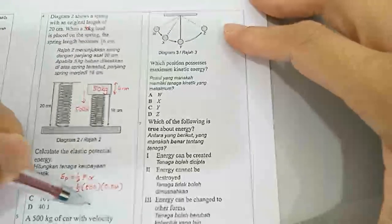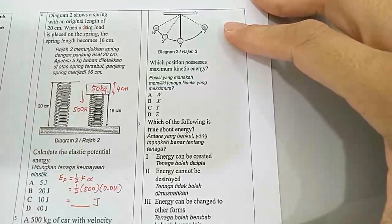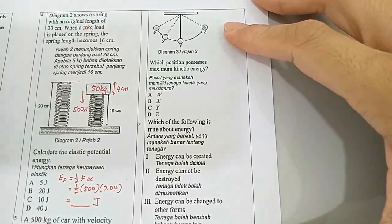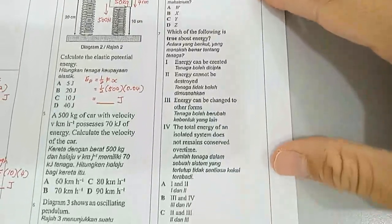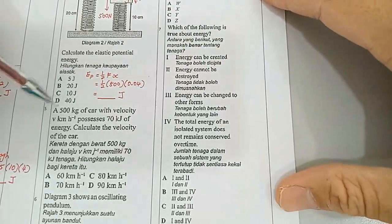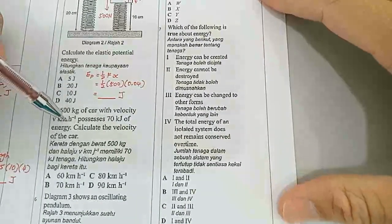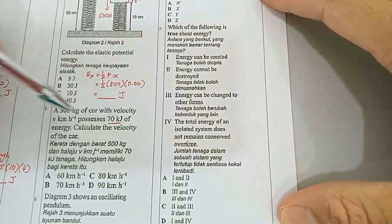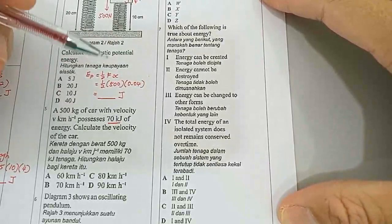So solving this, you can get the answer in joules. Now let's go to the next question. The next question is: a 500 kilogram car with velocity of V kilometer per hour possesses 70 kilojoules of energy. Calculate the velocity of the car.